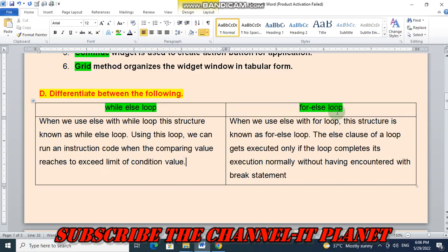And for else loop, when we use else with for loop, this structure is known as for else loop. The else clause of a loop gets executed only if the loop completes its execution normally without having encountered with break statement.